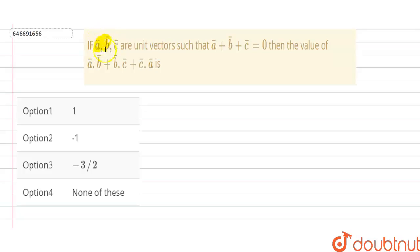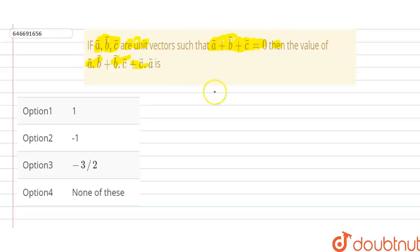In this question we are given that if a vector, b vector, c vector are unit vectors such that vector a plus vector b plus vector c is equal to zero, then the value of a dot b plus b dot c plus c dot a is given by. So given that a plus b plus c is equal to zero.